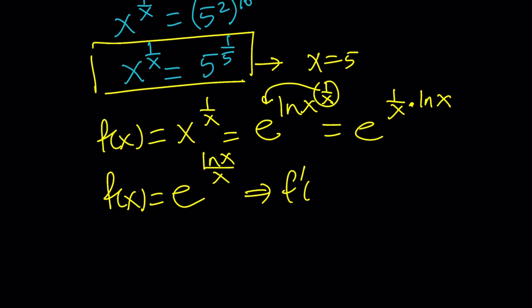Now, how do you differentiate e to the power f function? It's going to be this e to the power of the function times the derivative of the function, which is called the chain rule. Or you can say derivative of the inside. What's the derivative of ln x over x? It is the derivative of ln x, which is 1 over x, times x, minus the derivative of x times ln x. All of that is divided by x squared.